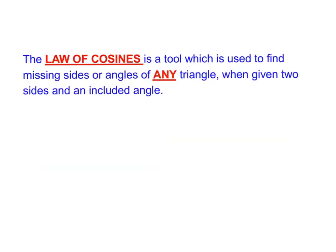Law of cosines is a tool when we have any triangle — this is a similar format to what I used when I introduced law of sines. It helps us find missing sides or angles of any triangle, not just right triangles, when you're given two sides and an included angle. We're only going to be focusing on finding a missing side in this course.